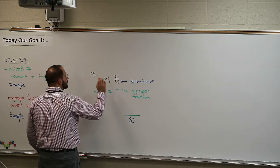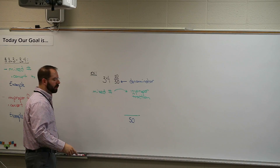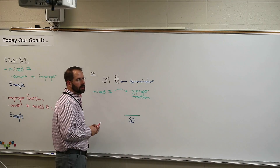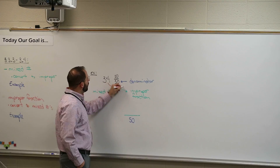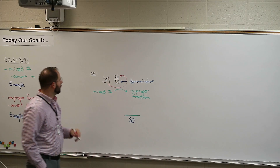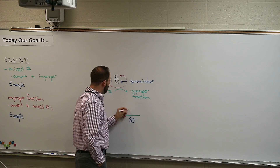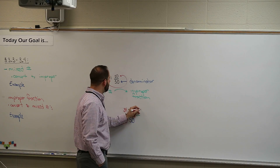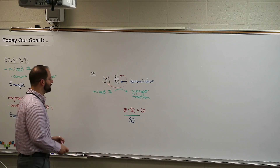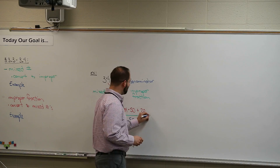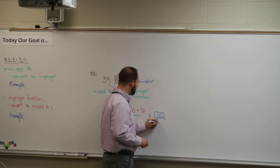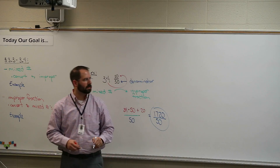Now how do we get the top number? You guys told me the rule yesterday — we called it 'the circle.' We take 34 times 50 and add 20. That gives us 1,720 over 50. That's a huge number but that's the answer — that's the improper fraction.